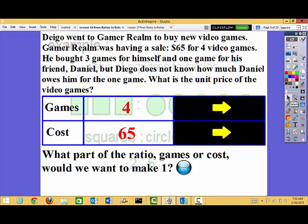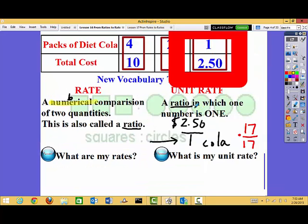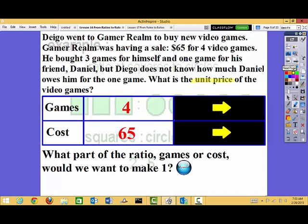Diego went to Gamer Realm to buy new video games. Gamer Realm was having a sale, $65 for 4 games. He bought 3 games for himself and 1 game for his friend Daniel. But Diego does not know how much Daniel owes him for the 1 game. What's the unit price for the video game? Well first, I see my new vocab word, unit price. And if I look back here, I know unit price means there's a 1 in part of the ratio.